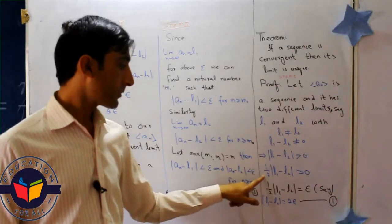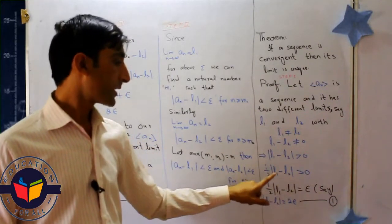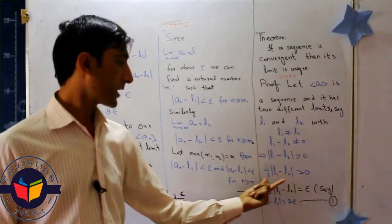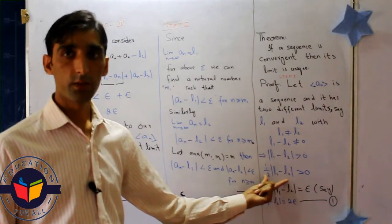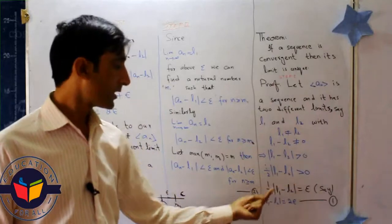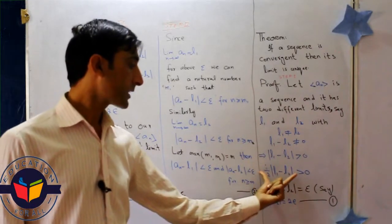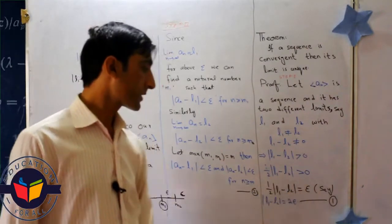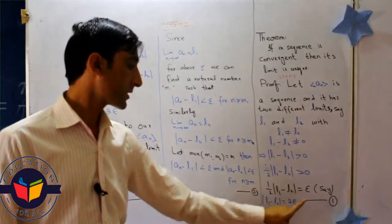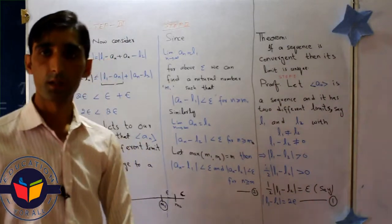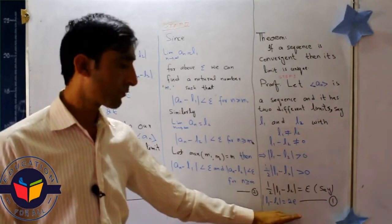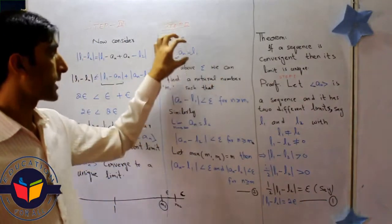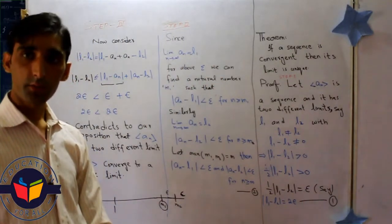If I write one by two on both sides, this value is positive. When I multiply with this positive value, this condition also holds. If I say that z is equal to epsilon, then this becomes l1 minus l2 equal to 2 epsilon. This is our first step and this is our first equation.